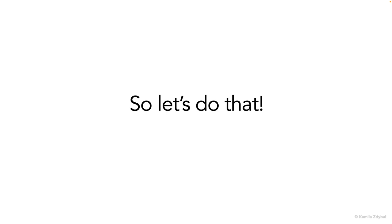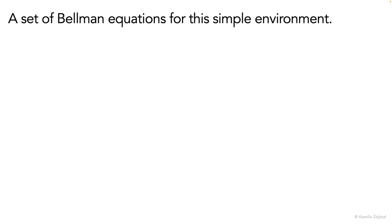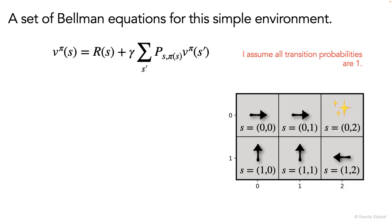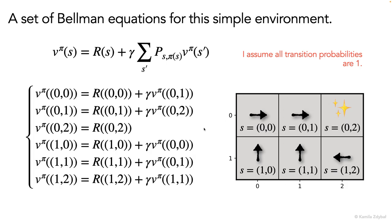So let's write the system of Bellman equations exactly for this simple environment. This is our template for each Bellman equation. And just to make things super simple, I will also assume that all transition probabilities are equal to one in this problem, so our robot executes all actions perfectly. So these are our states and policy, and this is the system of Bellman equations.